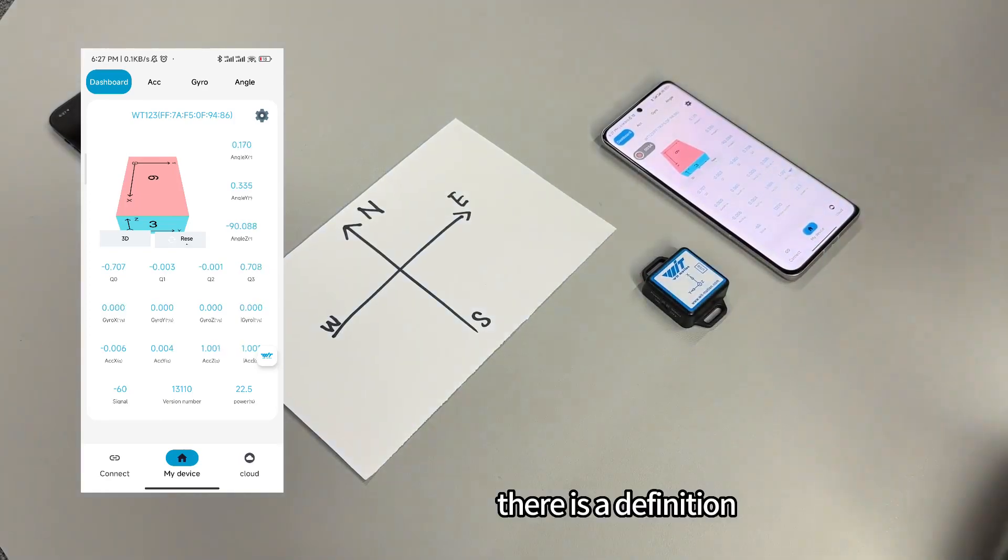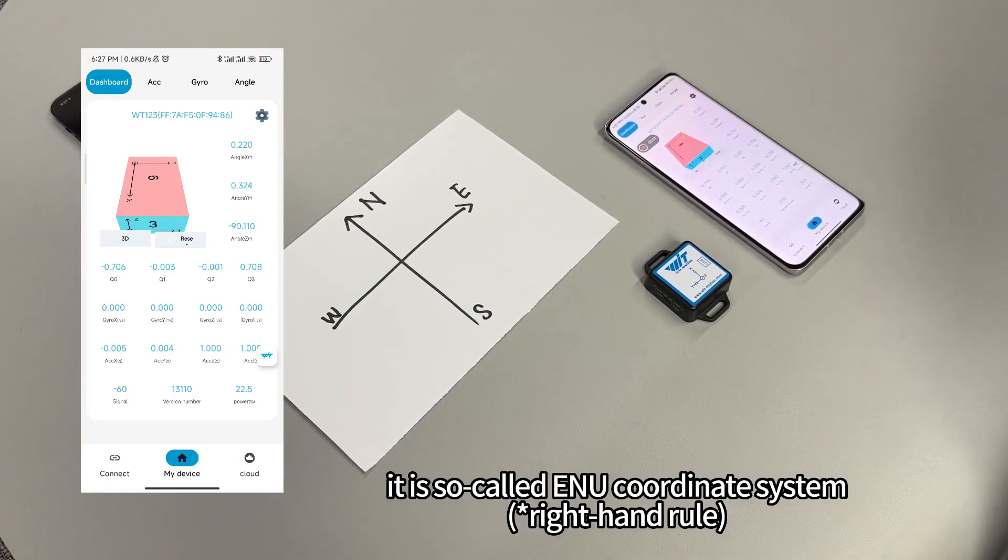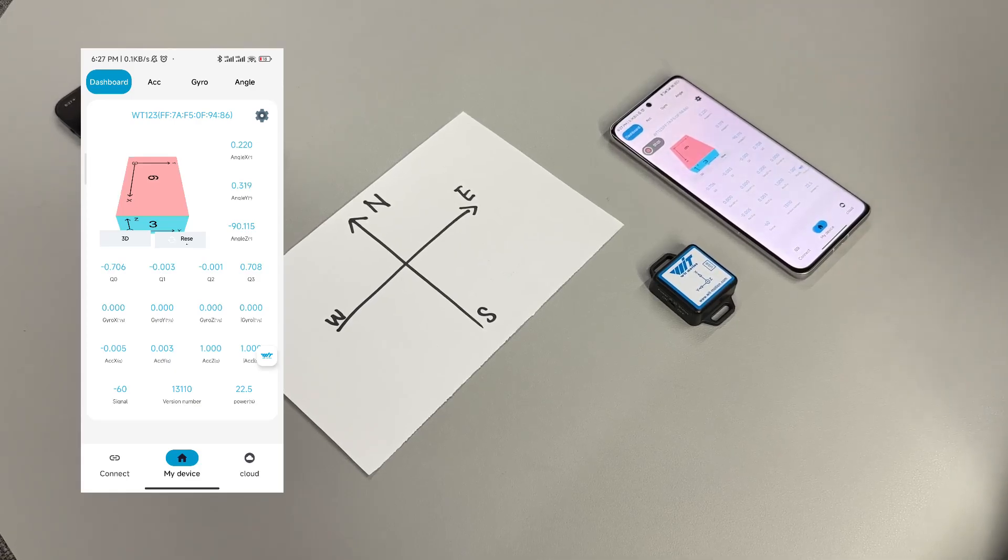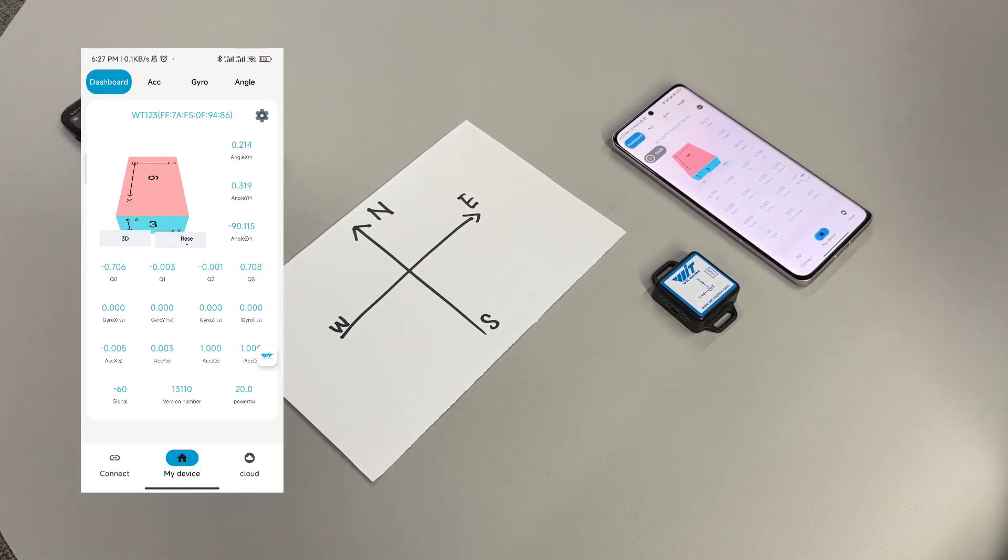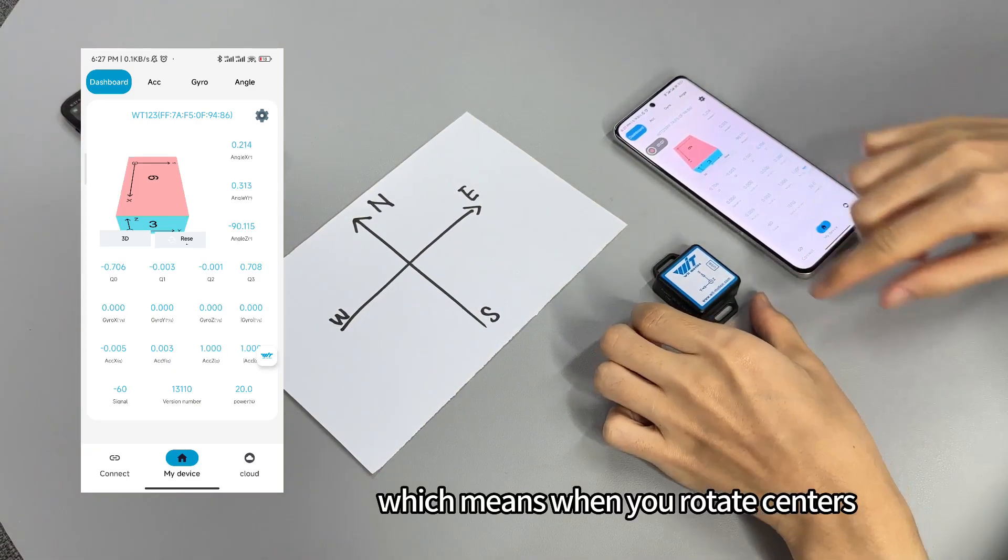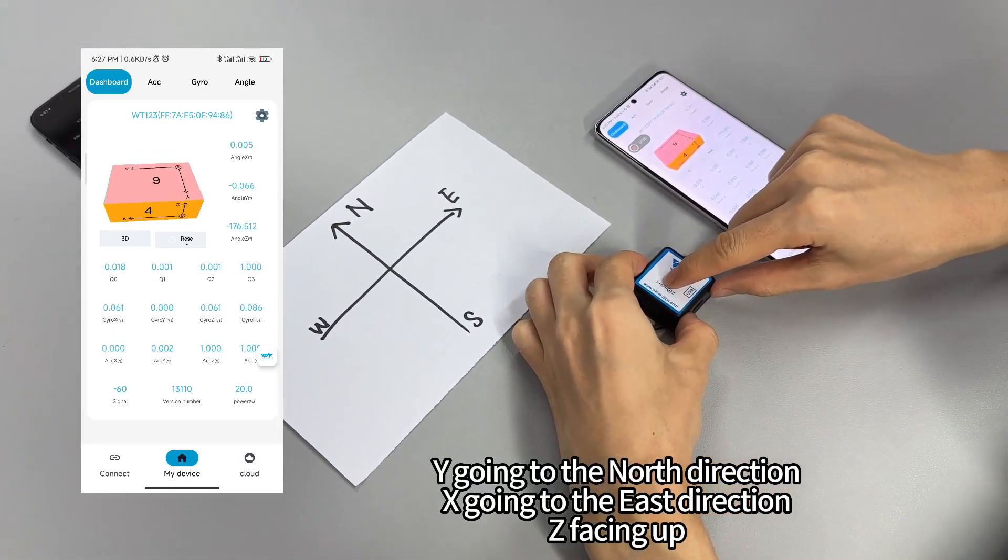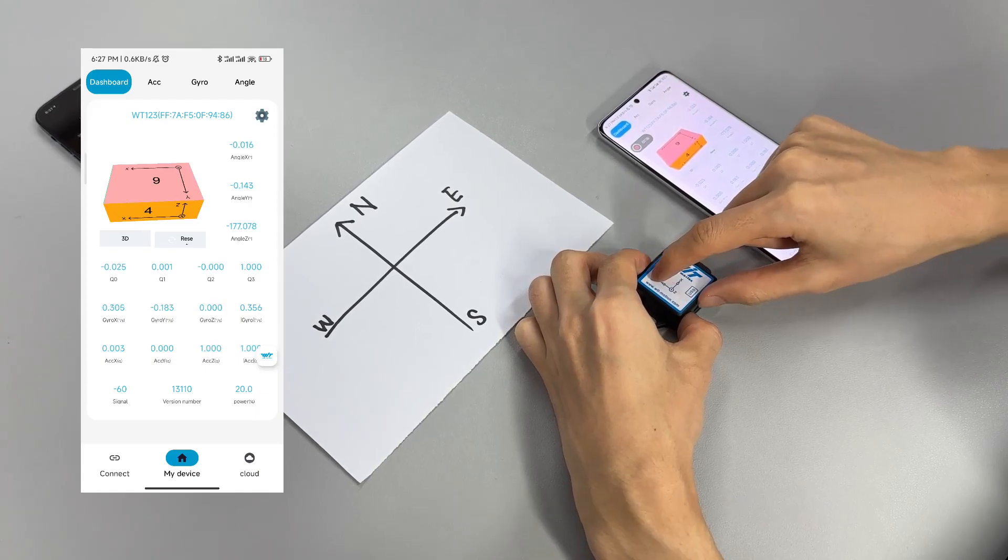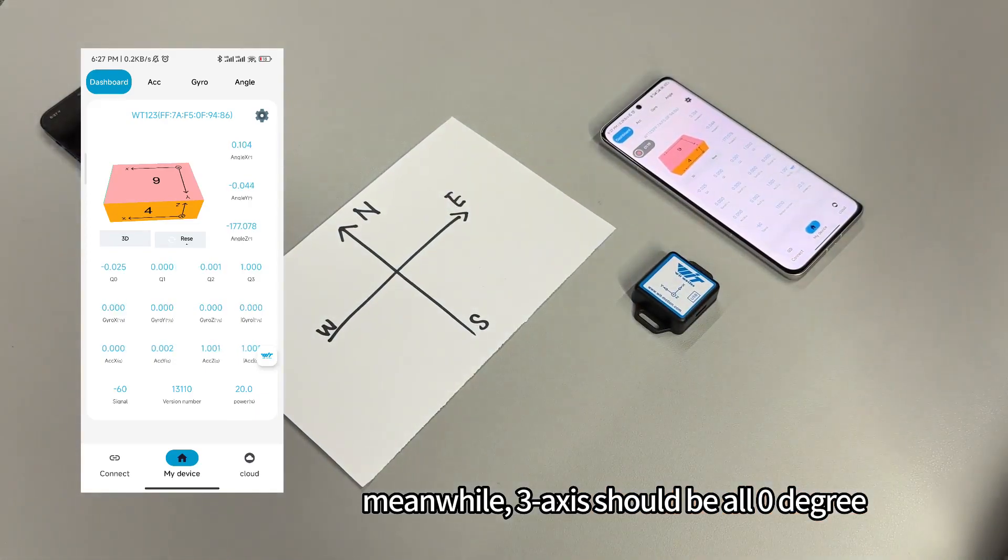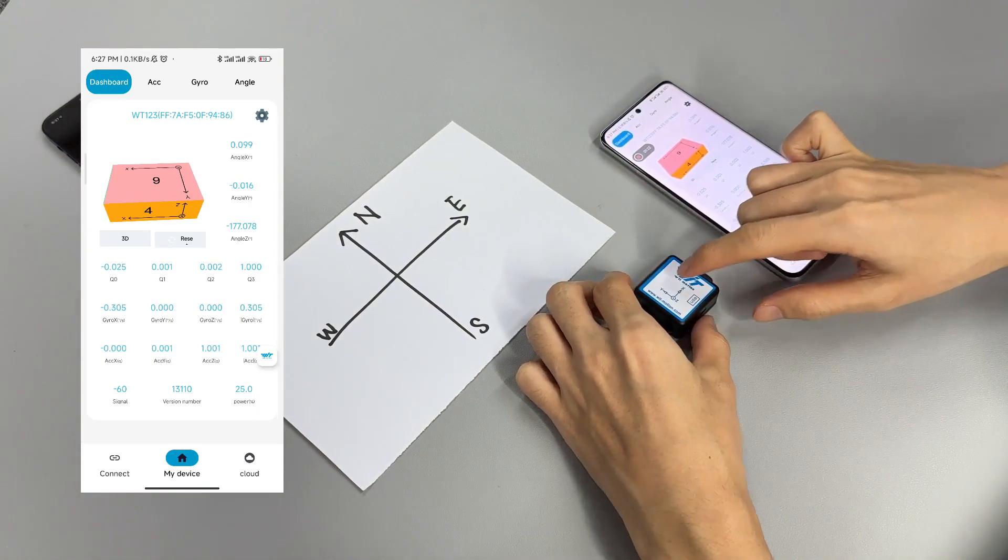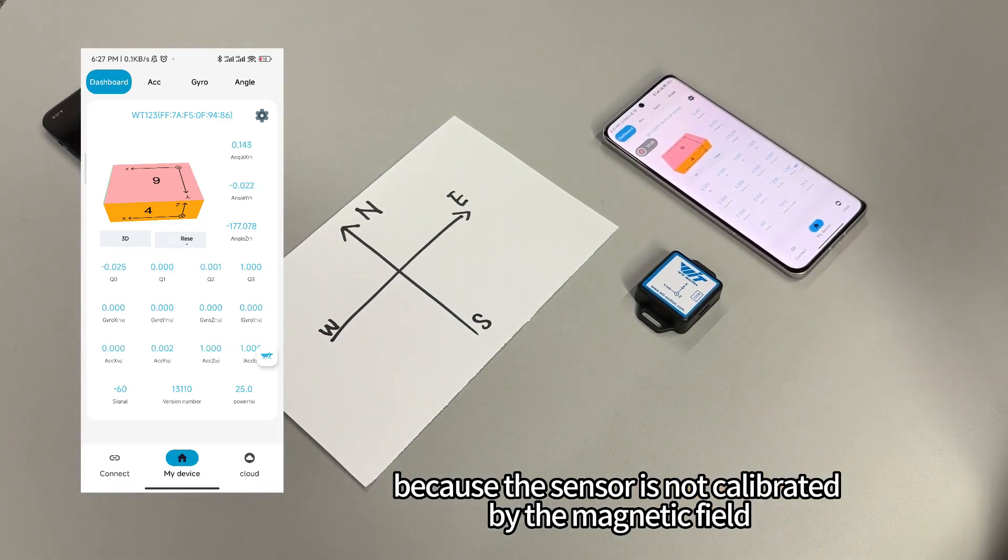You can see the arrow is very large because the center is not calibrated by the magnetic field.